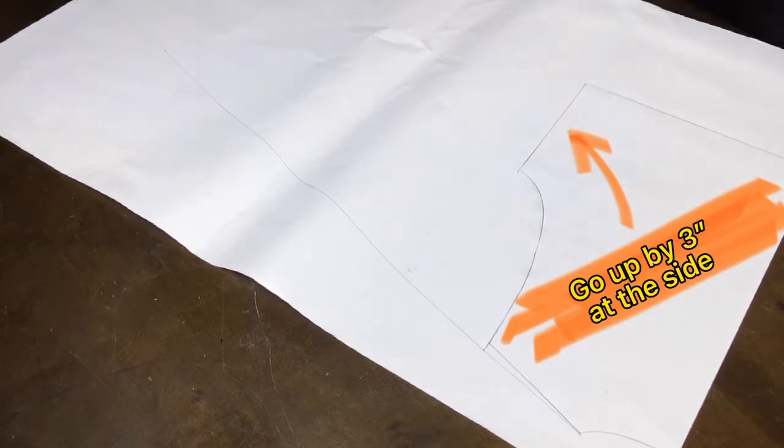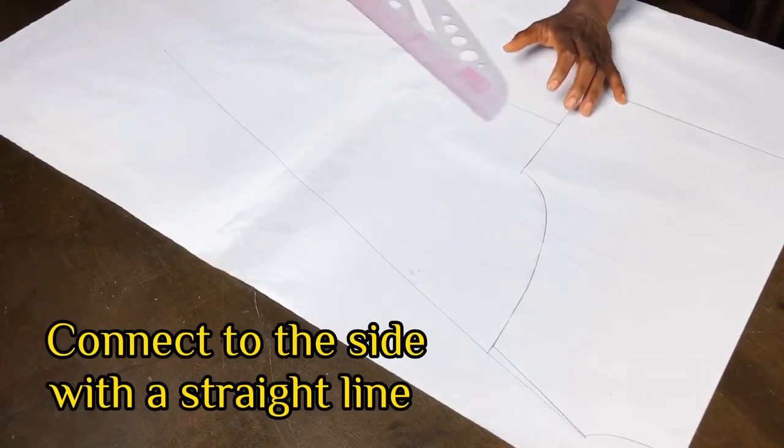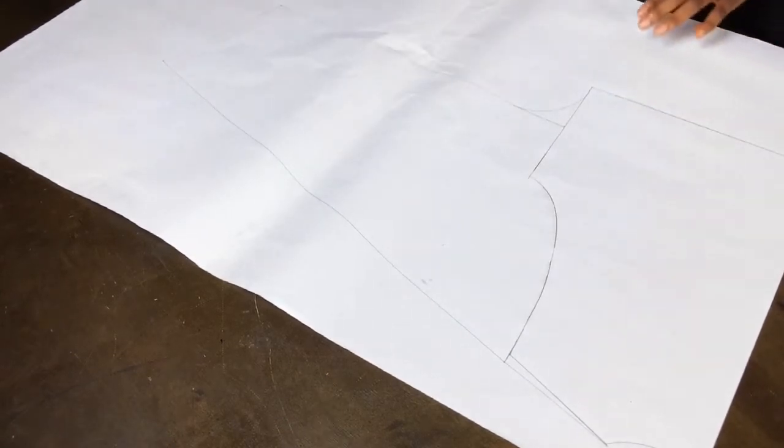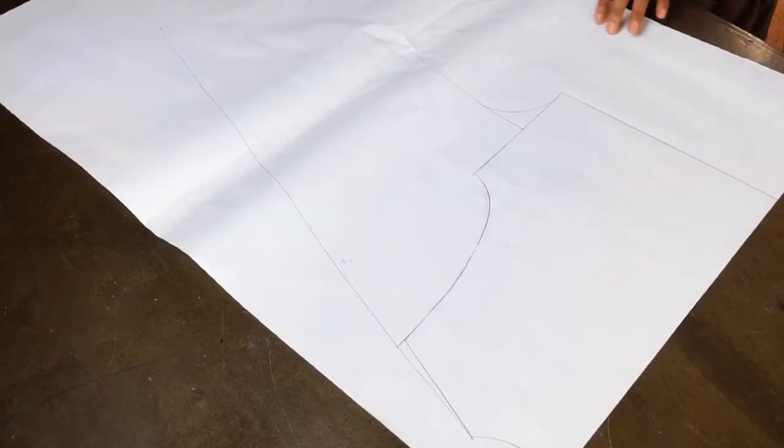For me I went up by like three inches from the waist. With the curved part of your ruler shape into the side of your pattern this way.